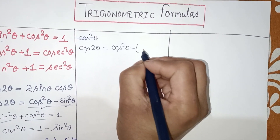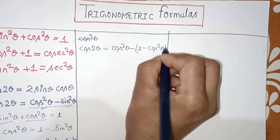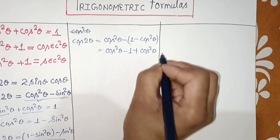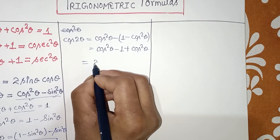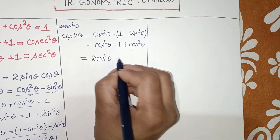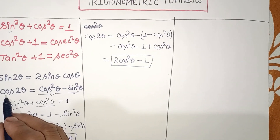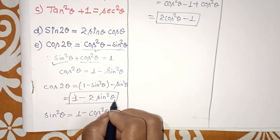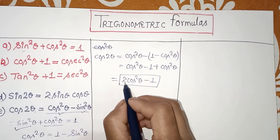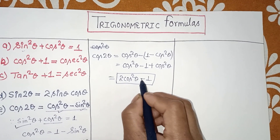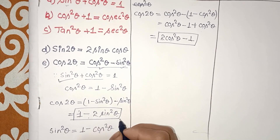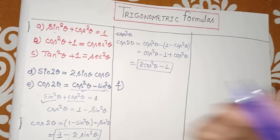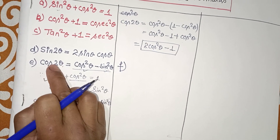Working through the substitution: cos 2θ = cos²θ − (1 − cos²θ) = cos²θ − 1 + cos²θ = 2cos²θ − 1. So there are three forms of cos 2θ: first, cos²θ − sin²θ; second, 1 − 2sin²θ; and third, 2cos²θ − 1. Note the difference: one has minus 1 and one has minus 2sin²θ, so be careful when remembering these.